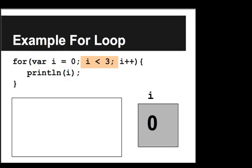Then the second part is the test. So we see here, is i less than three? Well yes, i is zero, and zero is less than three, so then we'll execute the code in between the curly braces. So we print line i, so we get a zero output. And then after we execute the code in the for loop, we go i plus plus. So the variable i increments, or goes up by one. So now i is one.